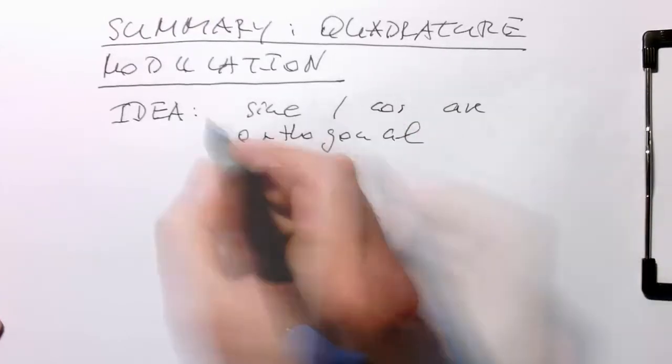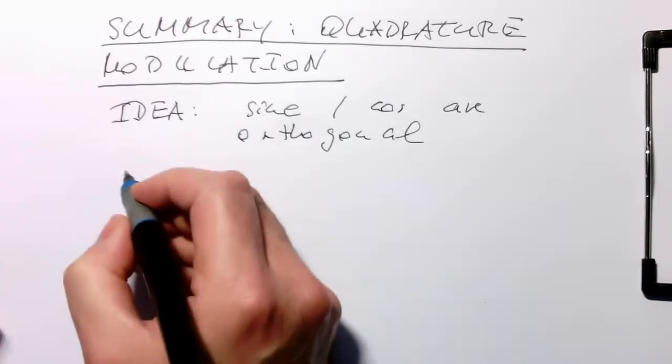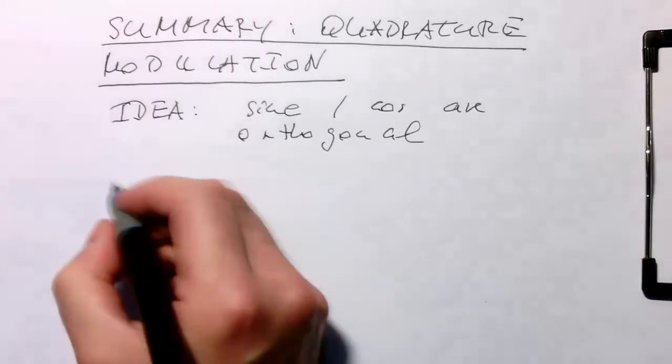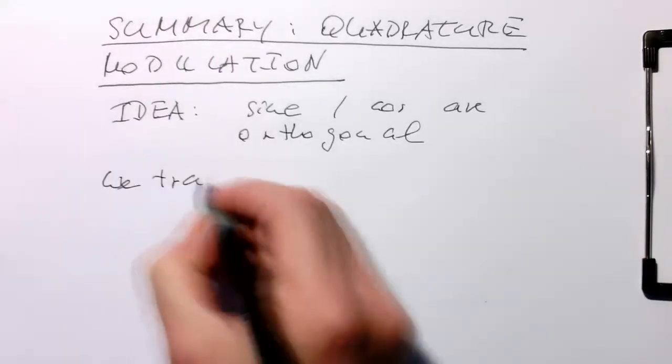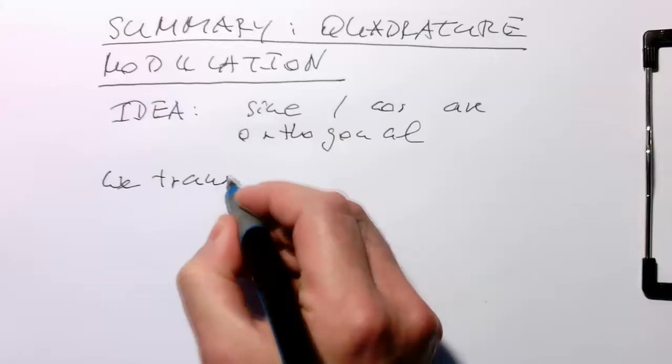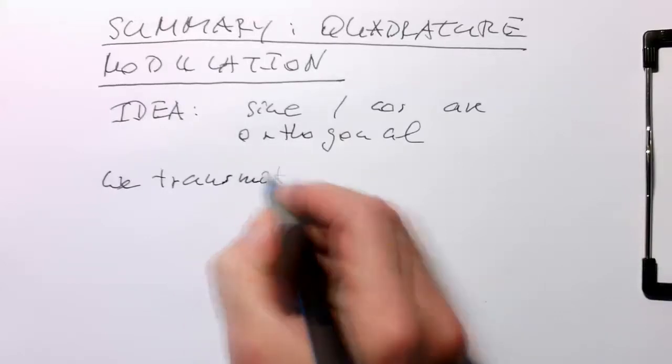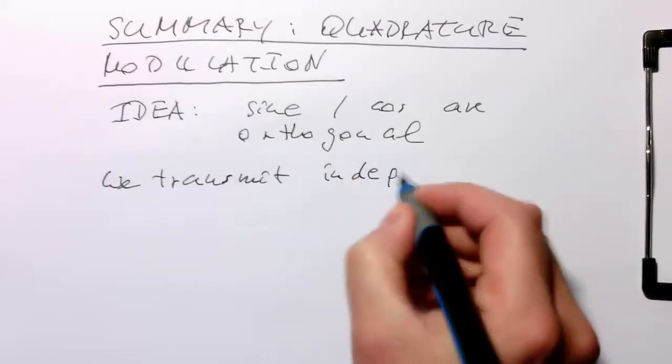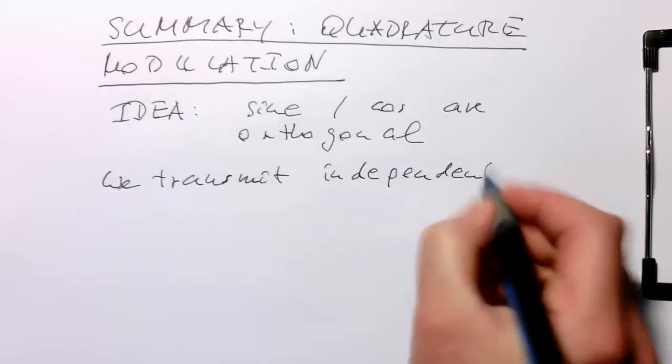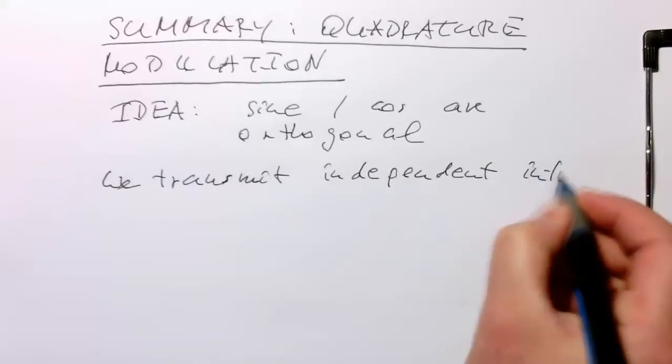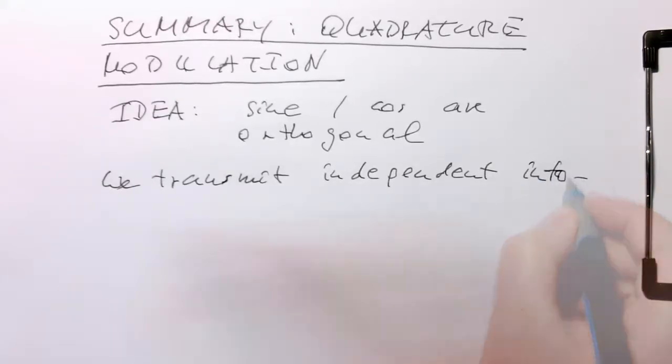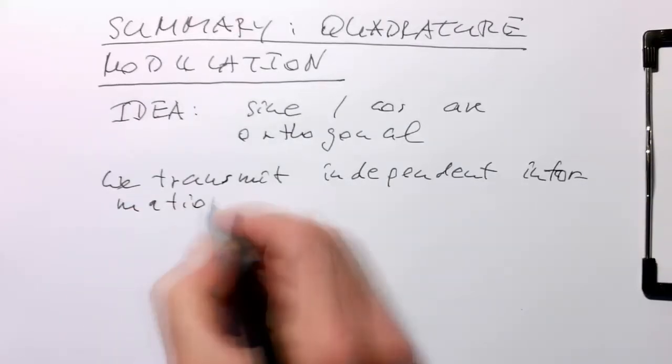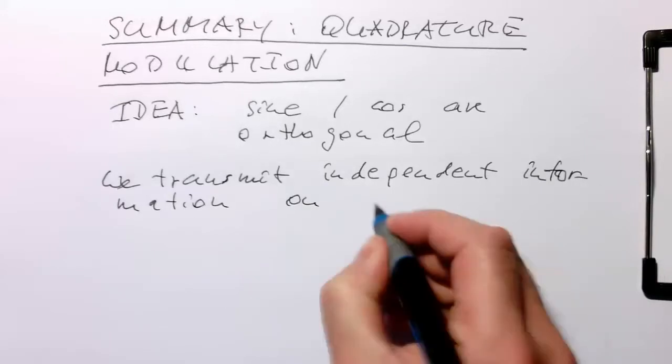So we are able to transmit independent information on sine and cosine. We transmit independent information on sine.